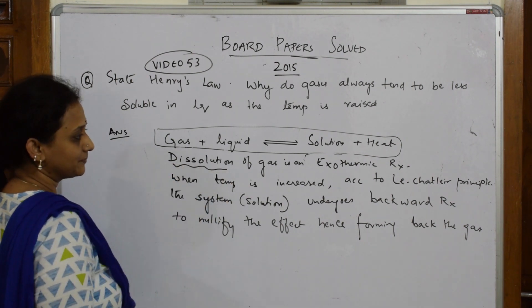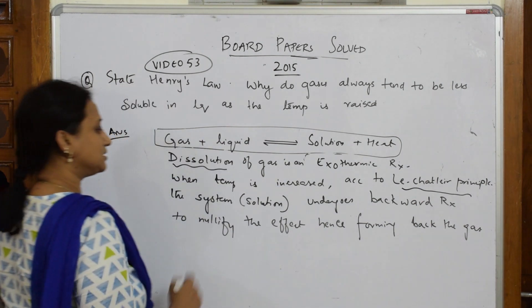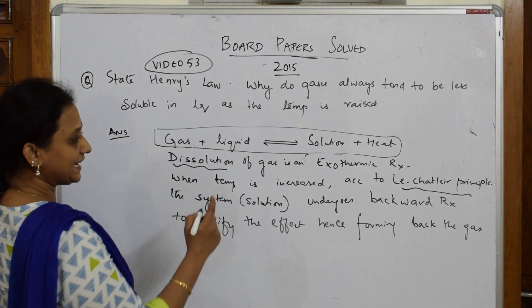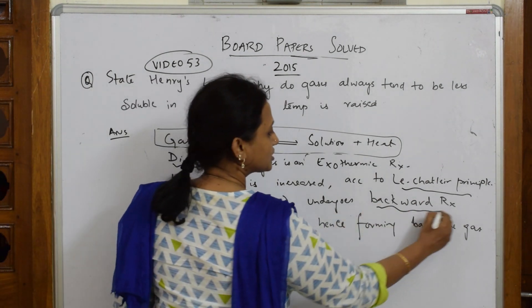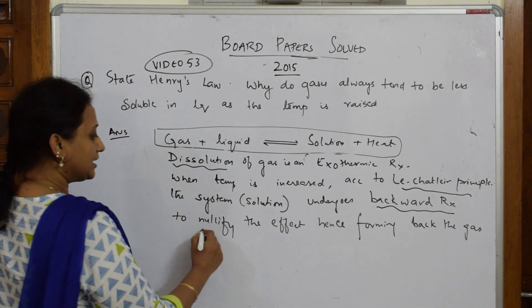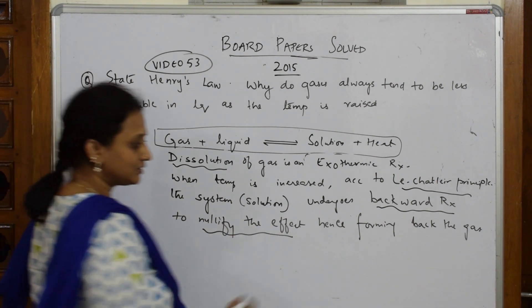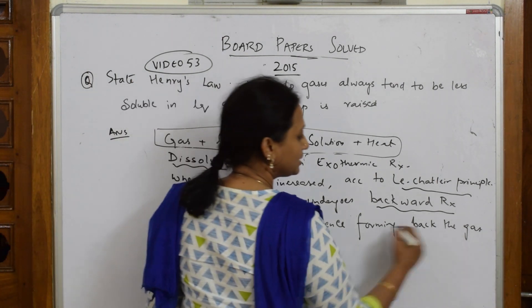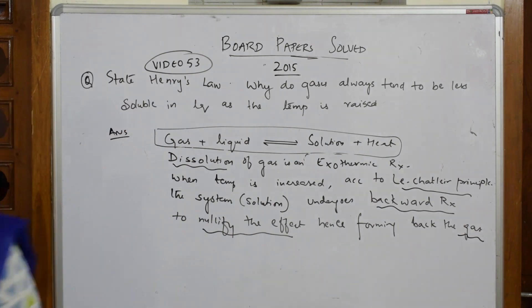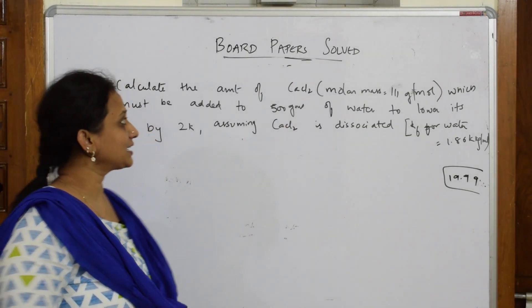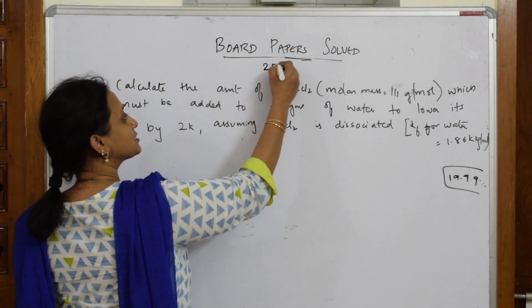You can write your answer this way. The key words to underline are: dissolution (first keyword), Le Chatelier's principle (second keyword), backward reaction (third keyword), nullify the effect (fourth keyword), and forming the gas (fifth keyword).